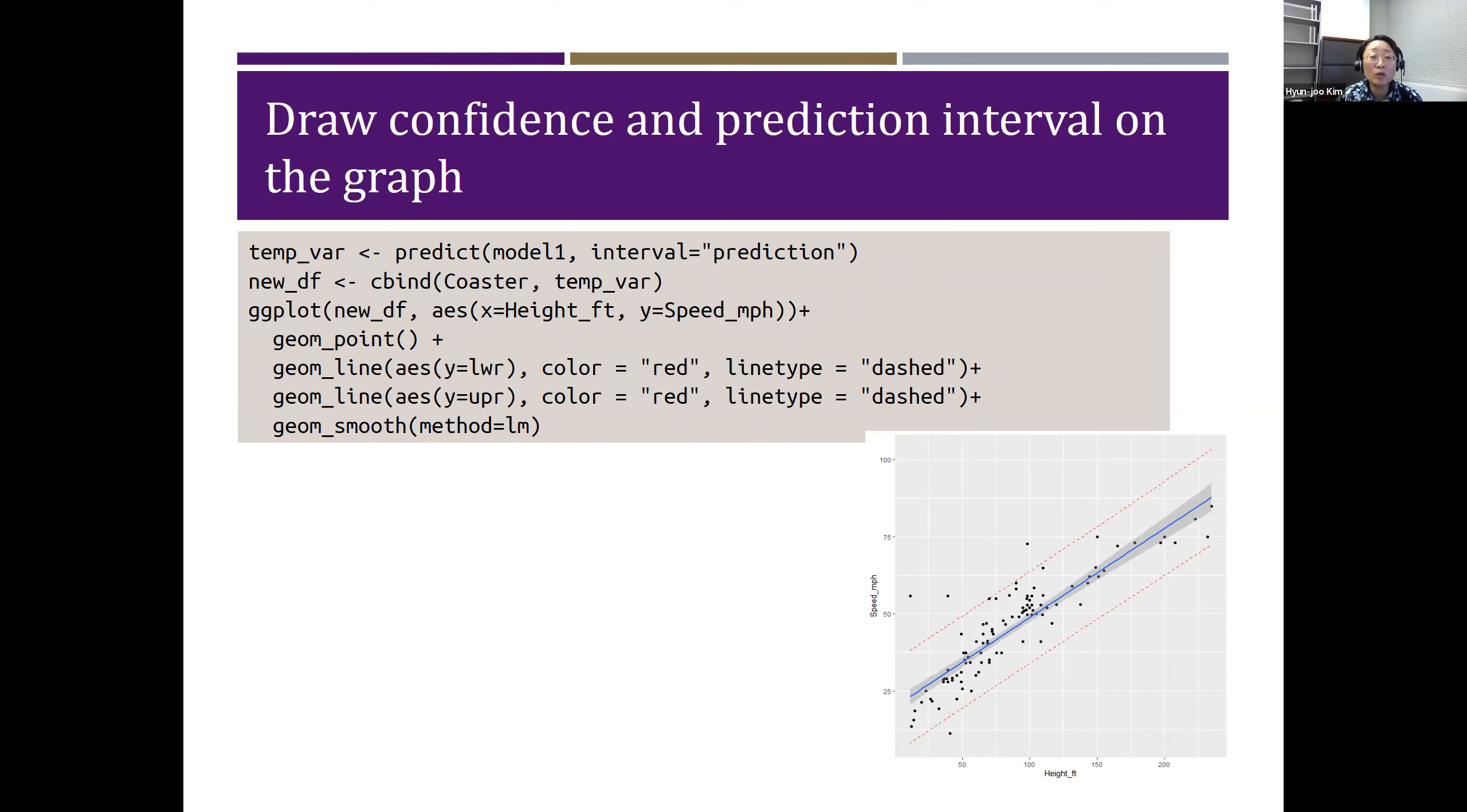We can manually draw the prediction intervals on the graph. Notice that the prediction interval was saved in temp_var, and we can draw the red lines using the geom_line function.